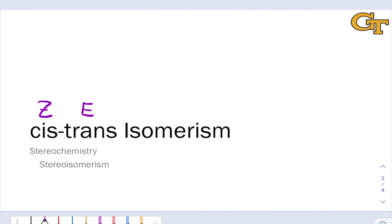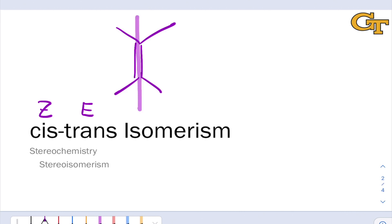The basic principle of cis-trans isomerism is that certain organic structures have intrinsic sides built into them. So if we look, for example, at an alkene — a carbon-carbon double bond — the CC double bond sort of has two sides. We can draw two R groups, R1 and R2, and think about those groups being on the same side of the double bond. This is what we call cis.